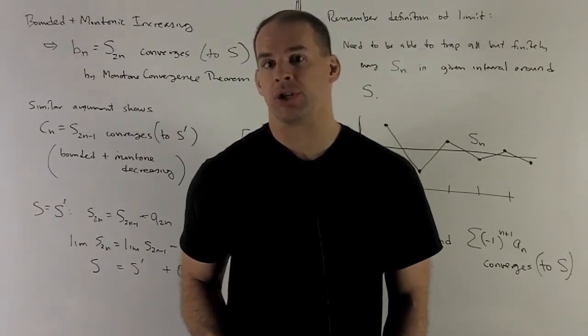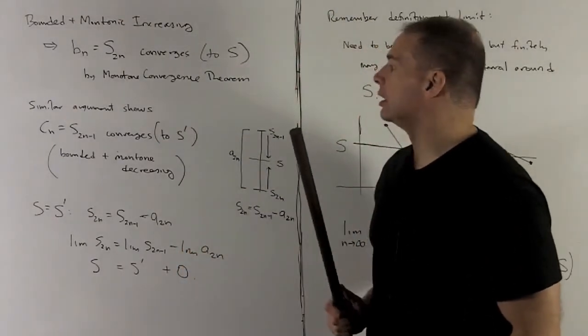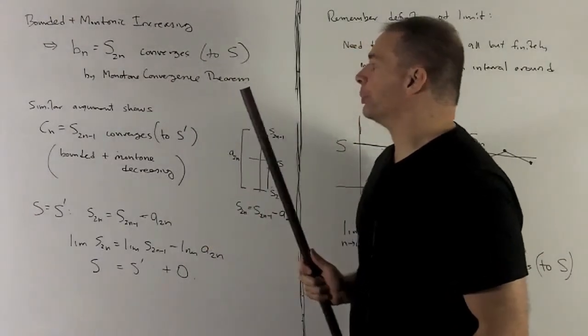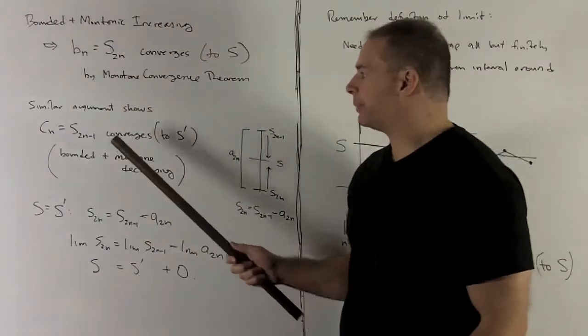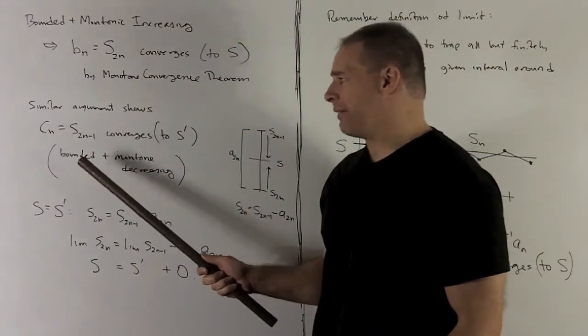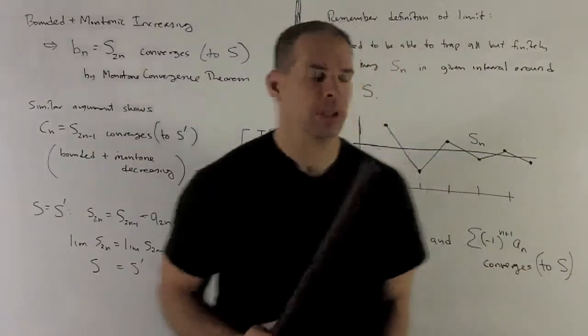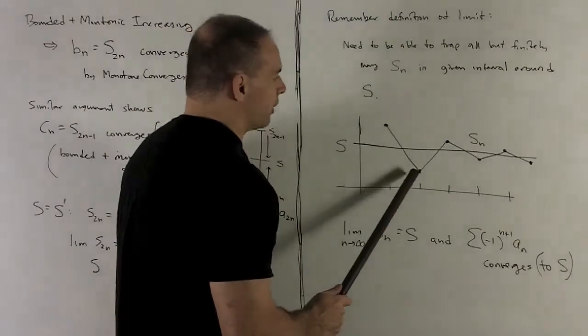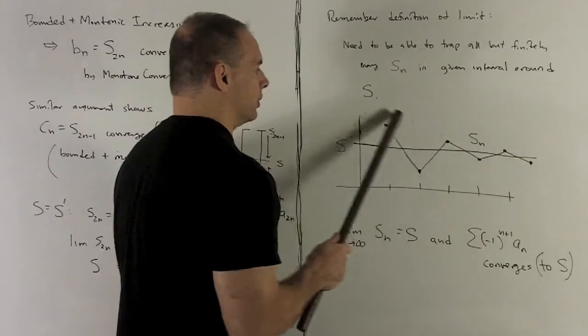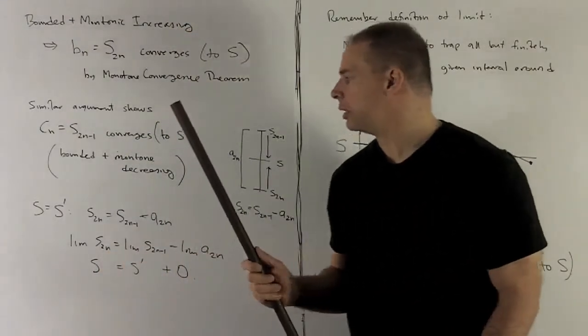Since our sequence is bounded and monotone increasing, I can appeal to the monotone convergence theorem to see that our sequence converges to some limit s. So the evens are going to converge. A similar argument is going to show that the odds are going to converge to some s prime, and that's going to be because we'll have bounded and instead monotone decreasing. So if we're looking at the picture here, the evens are on the bottom, monotone increasing up to s. The odds are on the top, monotone decreasing down to s.